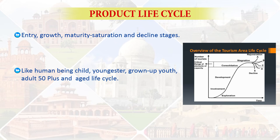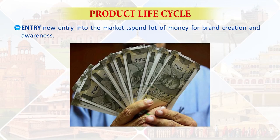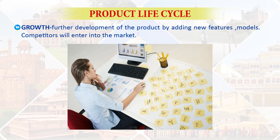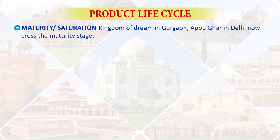It is like human life — a young boy may require different facilities, and as he grows to adulthood at 20–25, maximum output is there with different strategies required. At 50 plus comes saturation, and afterward the declining stage. Similarly in product designing: initially at the entry stage you may have to spend a lot of money so people know about the brand. During the growth stage, further product development is needed as many people come. Then through maturity, saturation, and decline.